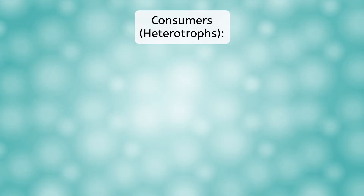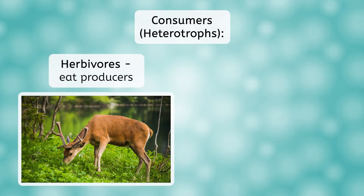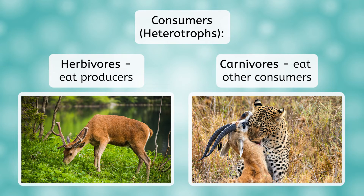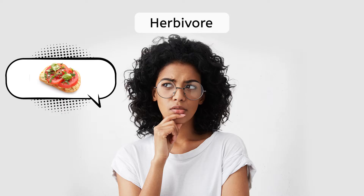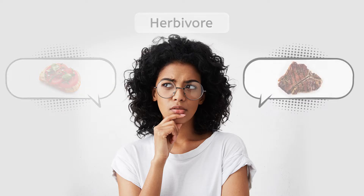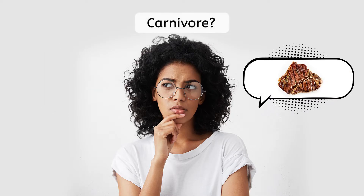Consumers, which are also known as heterotrophs, are often grouped into herbivores and carnivores. Herbivores eat producers, such as plants, while carnivores eat other consumers. So, are humans carnivores or herbivores? If you follow a vegetarian diet, you would be considered an herbivore. However, if you eat meat, does that make you a carnivore? After all, eating meat means eating other animals, and animals are consumers.